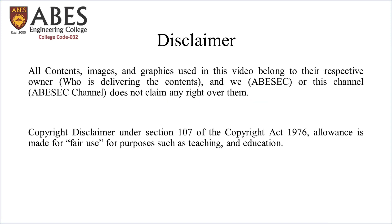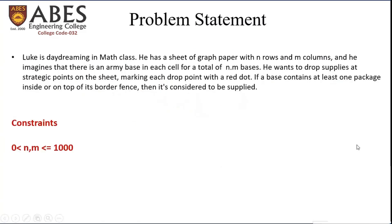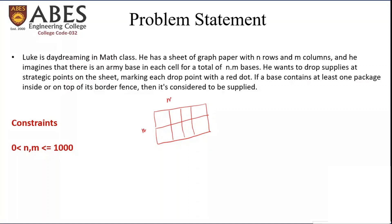The problem statement says that Luke is daydreaming in math class. He has a sheet of graph paper with N rows and M columns, and he imagines that there is an army base in each cell, for a total of N×M bases. He wants to drop supplies at strategic points on the sheet, marking each drop point with a red dot. If a base contains at least one package inside or on top of its border fence, it is considered to be supplied.